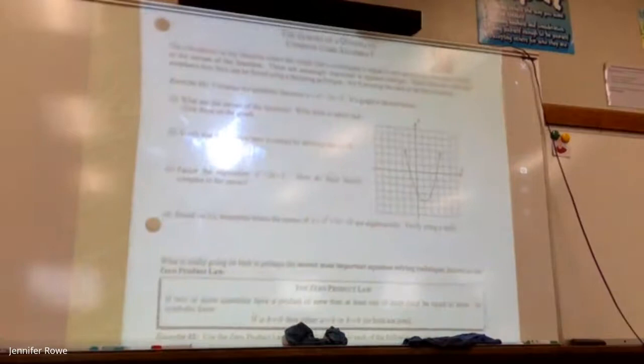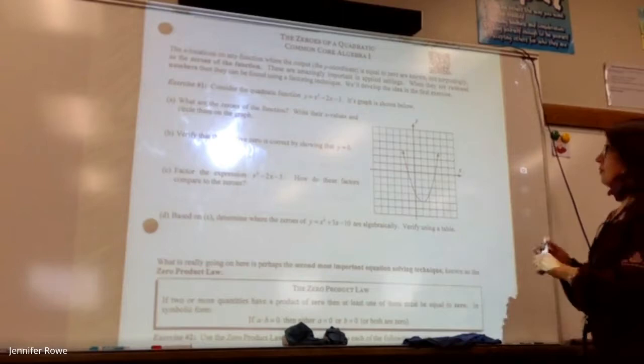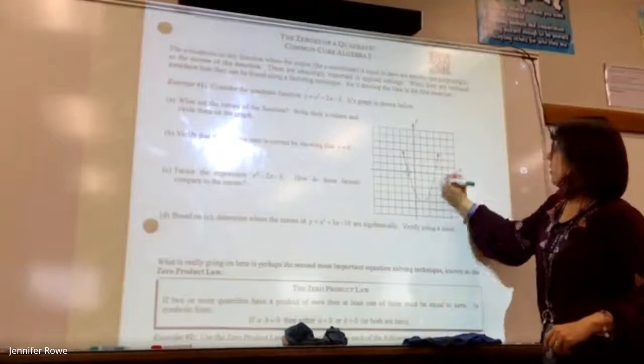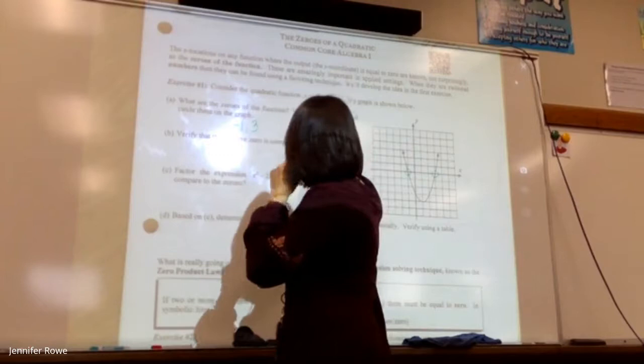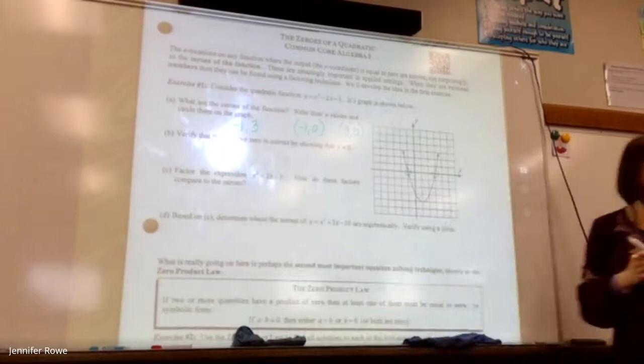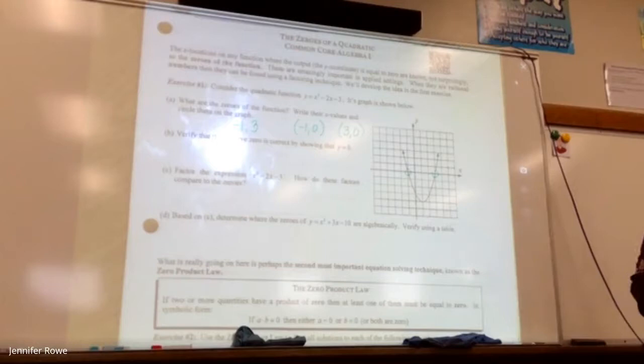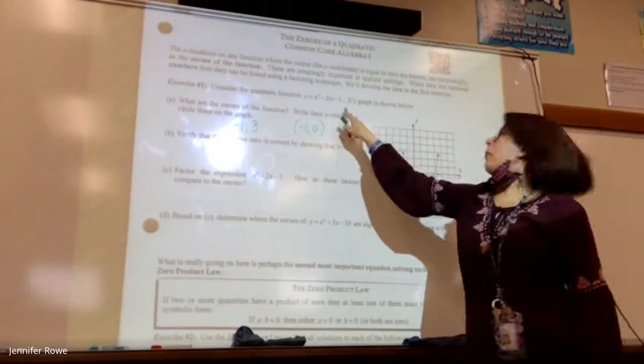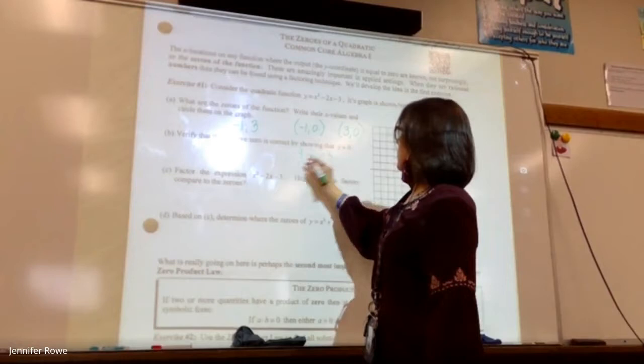So what are the zeros of this function? Break your x values and circle them on the graph. Where does it touch the x-axis? Negative one and three. They want us to verify that the positive zero is correct by showing that y equals zero. So I'm going to take the three and plug it in. Three squared is nine, nine minus six minus three. Nine minus six is three, three minus three is zero. Yep, it works.